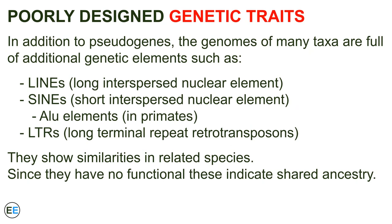In addition to pseudogenes, the genomes of many taxa are full of additional genetic elements such as LINEs, SINEs, Alu elements, and LTRs. The vast majority of these genetic elements don't appear to have any functional role, but they show similarities in related species. This is extra genetic material that you wouldn't put into a well-designed genome, but they are widespread because they are inherited from ancestors that acquired them.